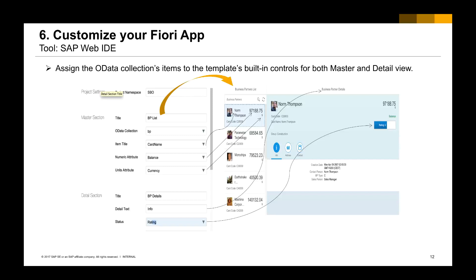And then in the next step, we just need to customize — customize the data binding and customize your Fiori app. So in the master section, you will need to customize the title shown on top of the master section, what data collection is bound to the master section — for our case it's master data — and then what is the item title. We're going to select the car name, and for numeric attribute we're going to show the balance, and the unit as the currency. And for the detail section, we're going to have one section for the BPRJS in this case.